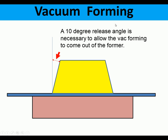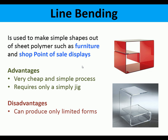It's important to remember that for vacuum forming, a 10-degree or so release angle is necessary to allow the plastic sheet to come off the former. Without it, it is very difficult to release — and this is another limitation of vacuum forming.